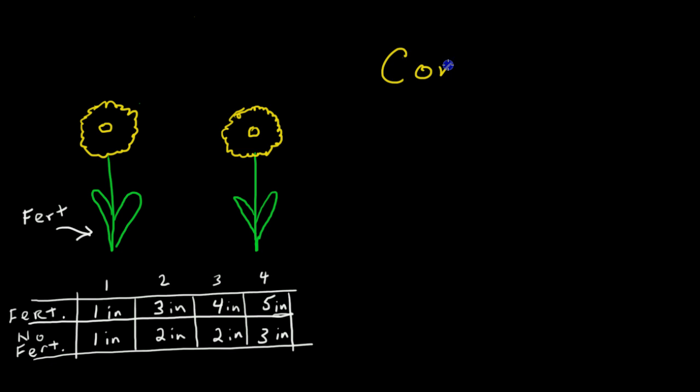Okay, so the other control, also known as the control group sometimes. Control group, depending on the type of experiment, would be the flower that we did not do anything to, that we did not add fertilizer to.